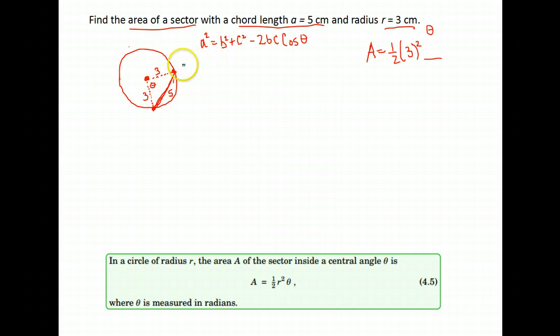We want to solve to find theta. Now I'm assuming my theta here is my angle A here. So, the side across from theta, 5 squared equals 3 squared plus 3 squared, those other two sides,